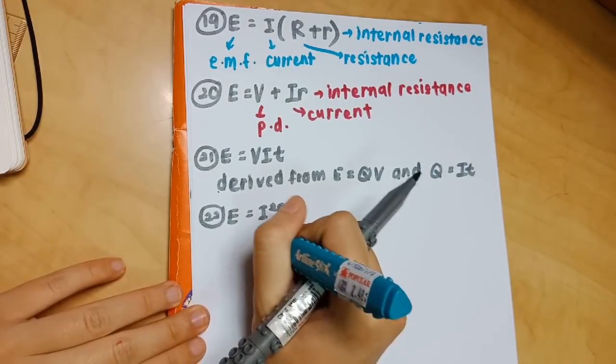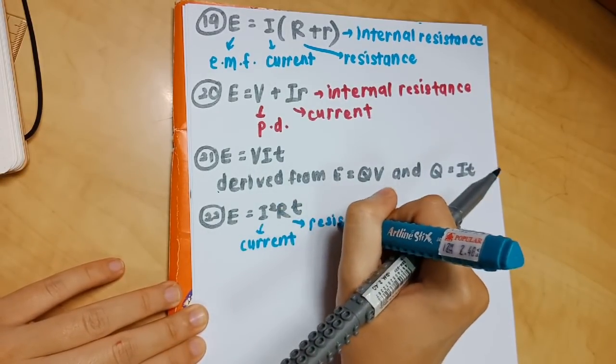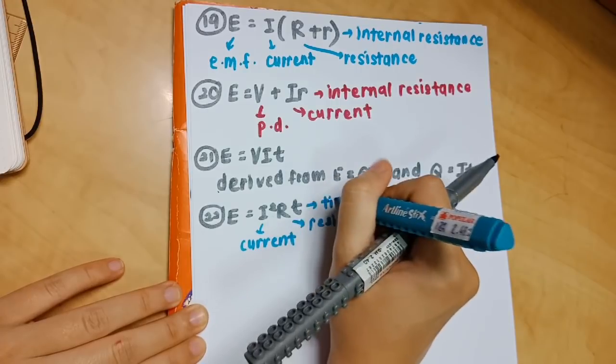Number 22: E equals I squared RT. I is current, R is resistance, and T is time.